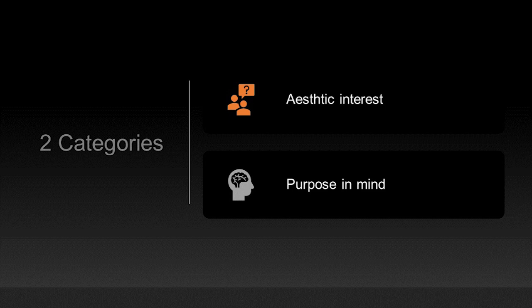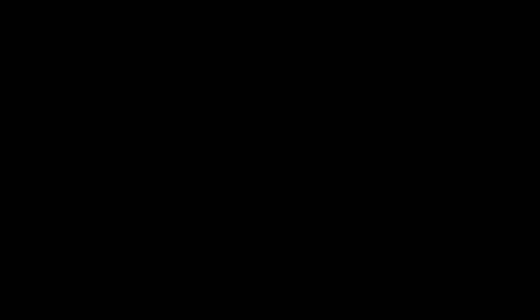After that, there are two categories: aesthetic interest and purpose in mind. I will try to talk more about these two categories. If you can envision it in your mind and hold it in your hand, that's why you get aesthetic interest and purpose in mind.